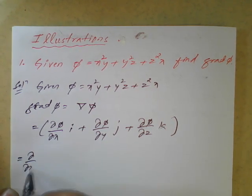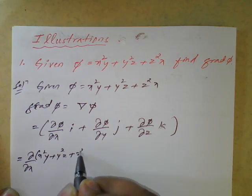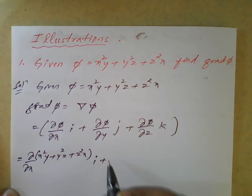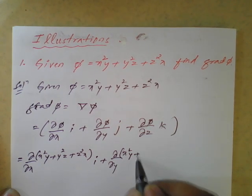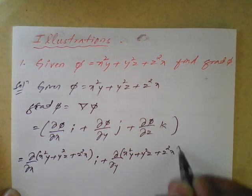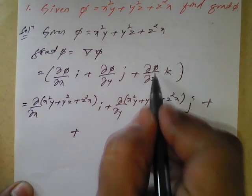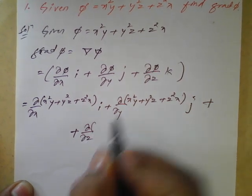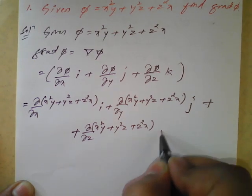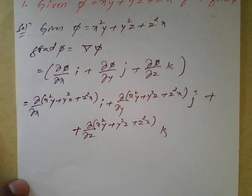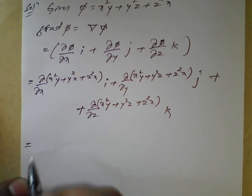Which is equal to: dou by dou x of (x squared y plus y squared z plus z squared x) times i, plus dou by dou y of (x squared y plus y squared z plus z squared x) times j, plus dou by dou z of (x squared y plus y squared z plus z squared x) times k. Now each partial derivative we need to apply correctly — we have three partial derivatives, with respect to x, with respect to y, and with respect to z.